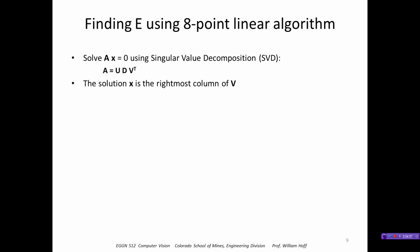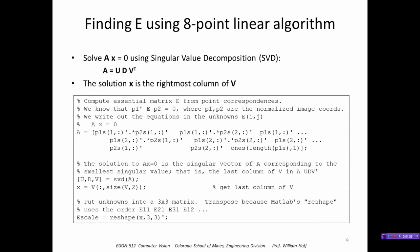Using the eight-point linear algorithm, we solve this equation Ax equals zero by taking the rightmost column of V. This is the code that does this: given that I start with two sets of points p1 and p2, this forms the matrix A according to that equation we saw earlier. This takes the SVD of A, and x is the rightmost column of V. X is a vector of our result in the form of a 9x1 vector, but we want that in the form of a 3x3 matrix, so we use MATLAB's reshape function.